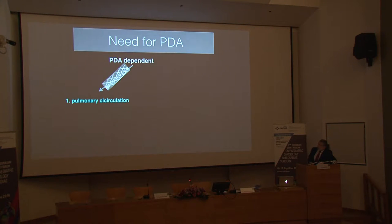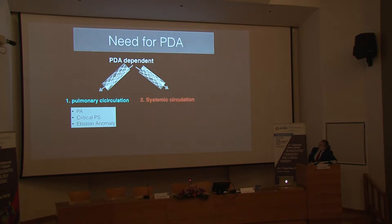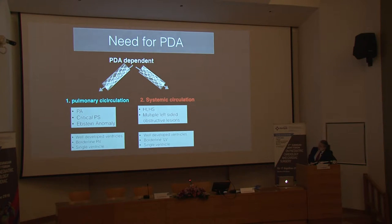Why do we need the PDA to remain open? We need an open PDA in PDA-dependent pulmonary circulation, such as in patients with pulmonary atresia, critical pulmonary stenosis, or neonatal severe Ebstein's anomaly with functional pulmonary atresia. We also need it in systemic circulation, as in hypoplastic left heart syndrome or multiple left-sided obstructive lesions. In all these situations, the patient may have well-developed biventricles, a borderline ventricle, or a single ventricle.